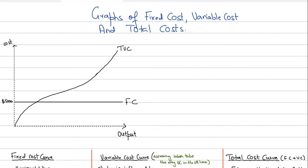Hi guys, in this video we're going to be discussing the graphs of fixed cost, variable cost, and total cost. In the previous video we discussed how to calculate these costs. In this video we're going to be focusing on the graphs, so make sure you watch the video till the end and I'll try my best to clear your confusions.